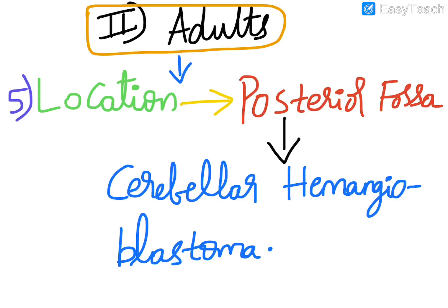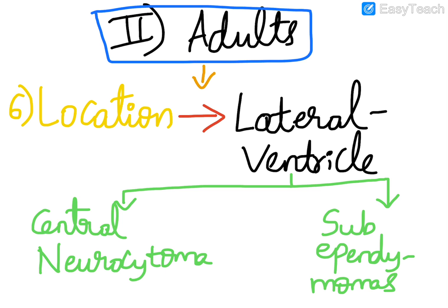Moving on to the next location in the adult age group, the posterior fossa. From the posterior fossa we see cerebellar hemangioblastoma, which has an association with a syndrome called von Hippel-Lindau syndrome.